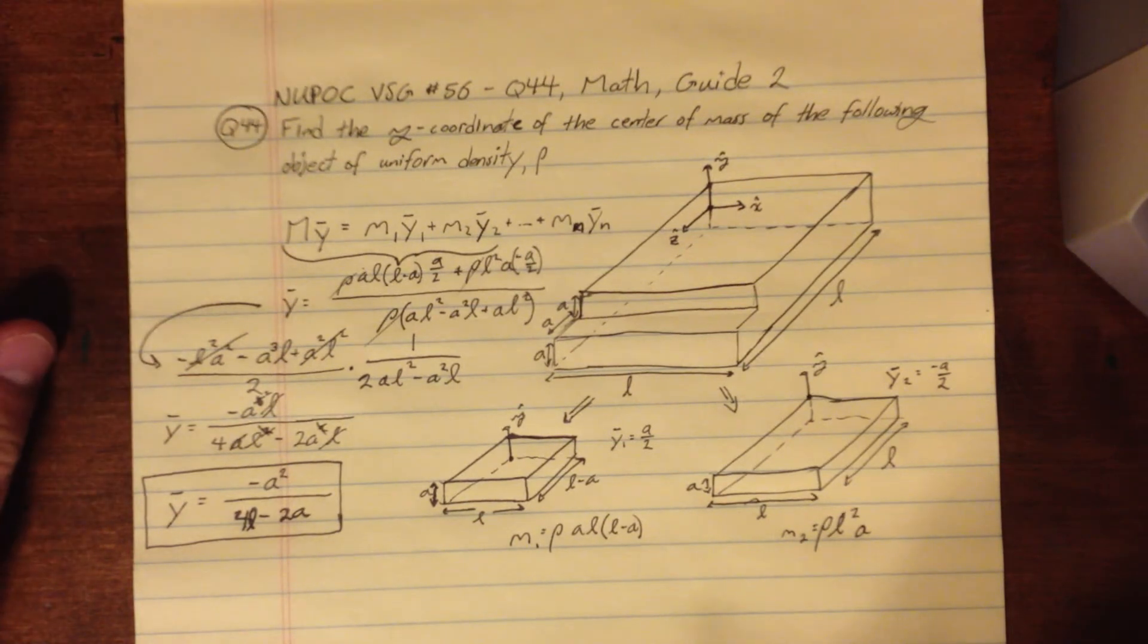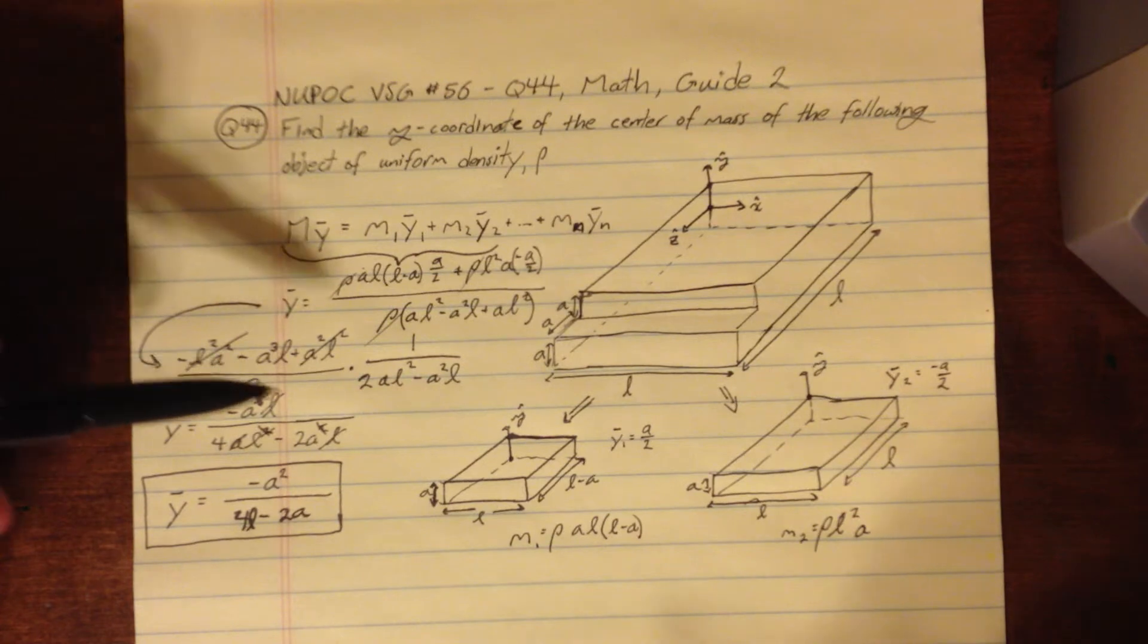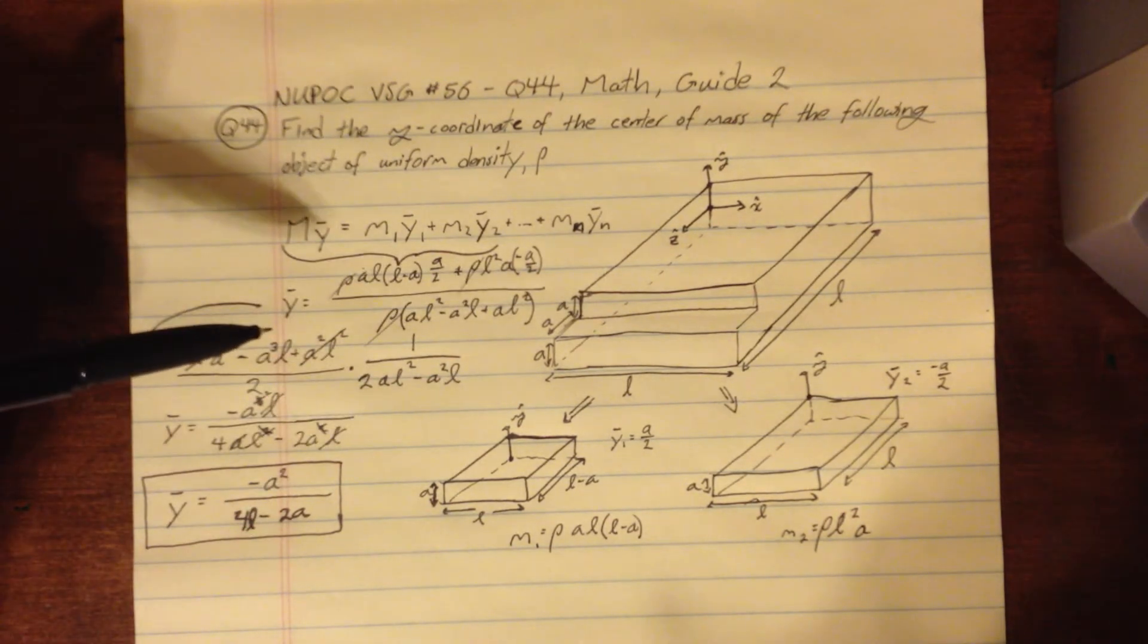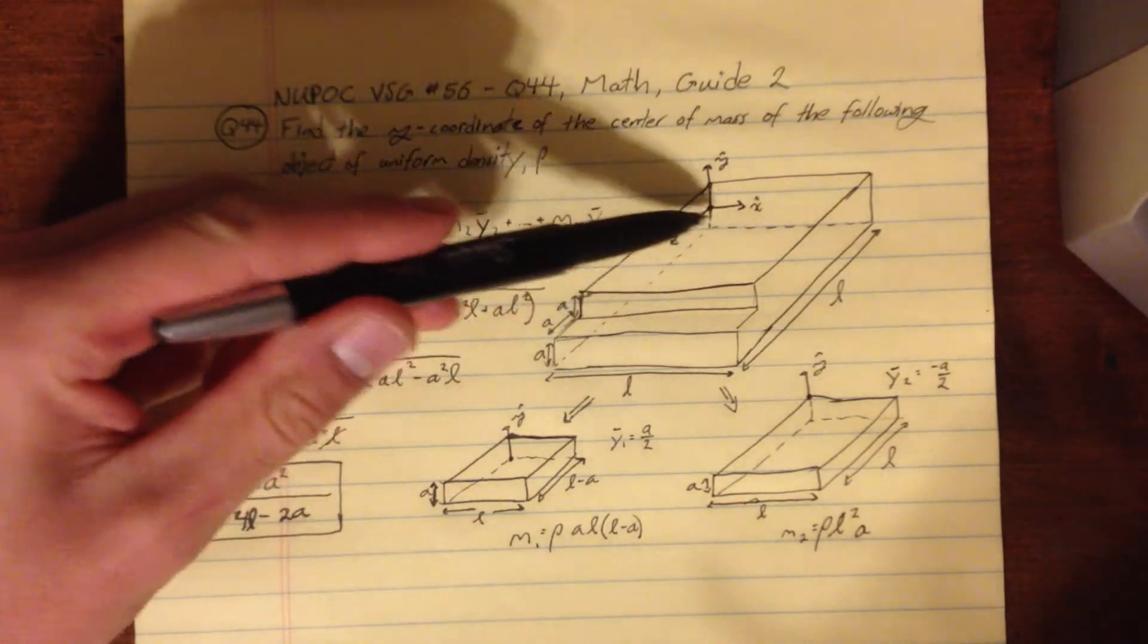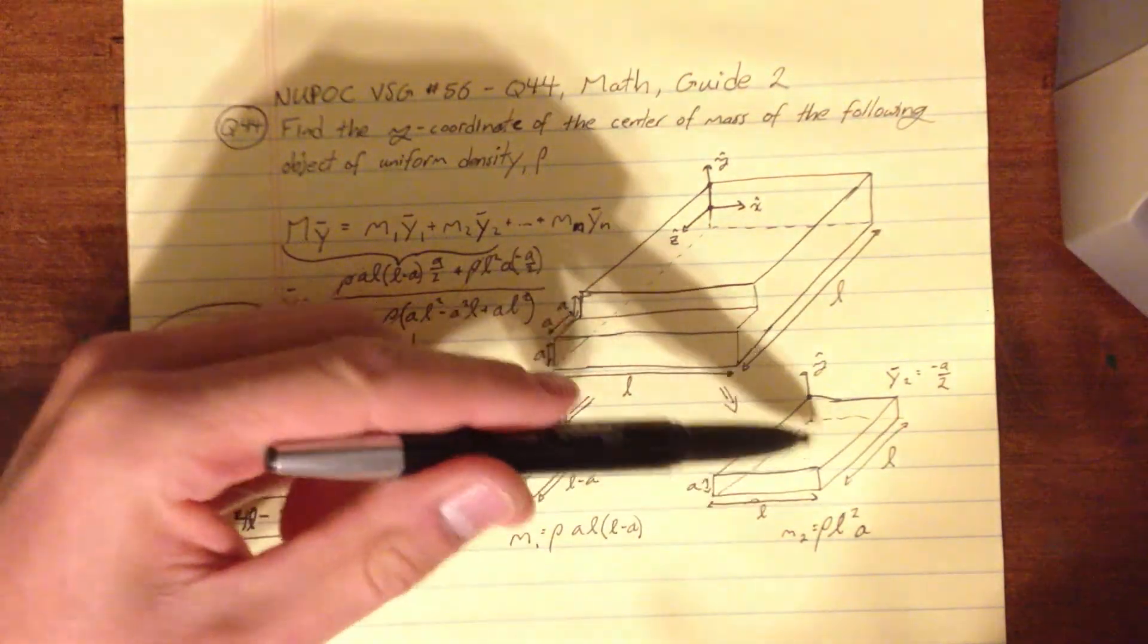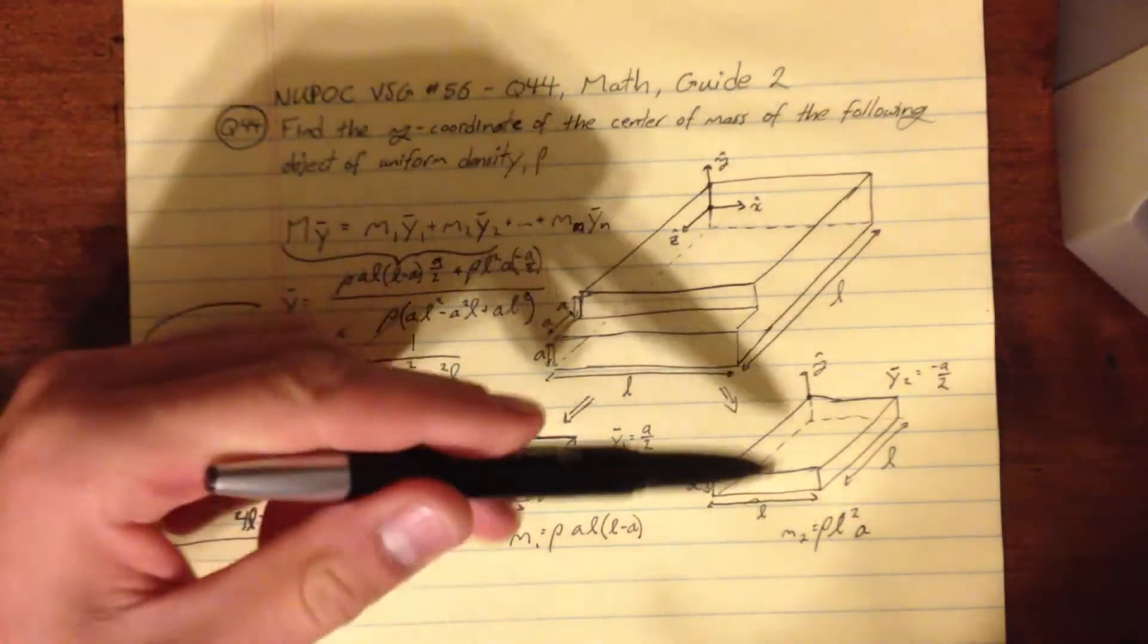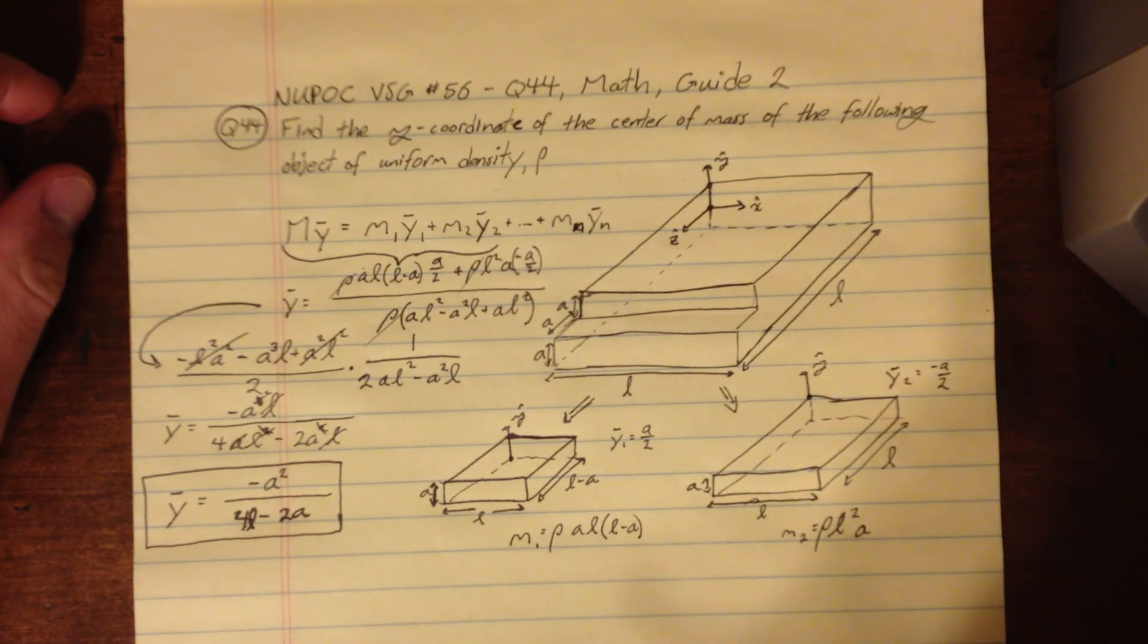But anyways, that's just a quick walkthrough of how to sort of apply the method of component parts for finding the center of mass for pretty basic geometric shapes, especially when you have uniform density, it makes it very easy, and if you didn't have uniform density and you had some sort of density function given, you could sort of just integrate that density function over the different component parts if you knew the density functions inside them, and then apply the method of component parts again. So anyways, that's about that.